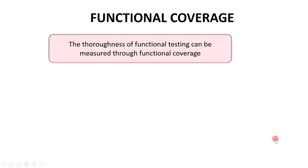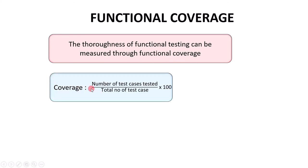At the end of this lecture, we will understand how to calculate functional coverage. Why do we need to calculate functional coverage? Because the thoroughness of functional testing can be measured through functional coverage. Functional coverage is calculated by dividing the number of test cases tested by the total number of test cases and multiplying by 100.